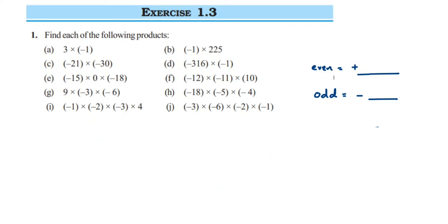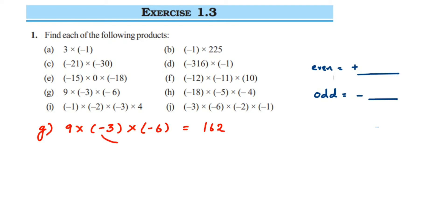Problem G: 9 into minus 3 into minus 6. First multiply the numbers — 9 into 3 into 6 gives 162. Now let's check the sign: we have two negative signs. Minus into minus is plus, or 2 is an even number, so the final answer is positive 162.